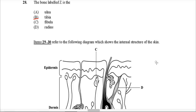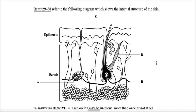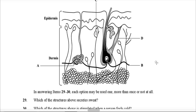Items 29 to 30 refer to a diagram showing the internal structure of the skin. Each option may be used once, more than once, or not at all. For question 29 — which structure secretes sweat? That would be the sweat gland, which can be identified in the diagram as A. So A is the sweat gland.